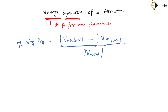If we express this as a percentage, it has to be multiplied by 100. This is a generalized formula that can be applied everywhere — to transmission lines, alternators, transformers, induction machines, and other machines as well.